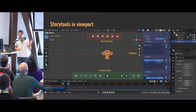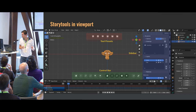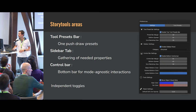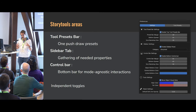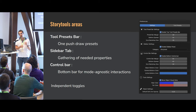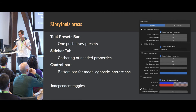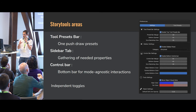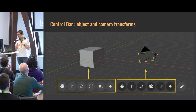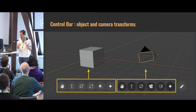For features, everything is in the viewport. There are three main areas: the control bar at the bottom highlighted in green, the classic sidebar on the right, and the tool preset area highlighted in red above. These areas coexist but do different things, and you can enable them separately — if you already have a tool handling part of the functionality, you can disable that section. They have independent toggles and preferences.